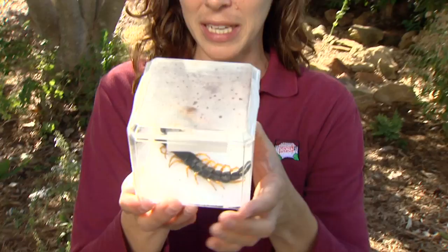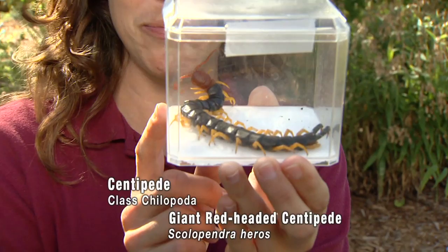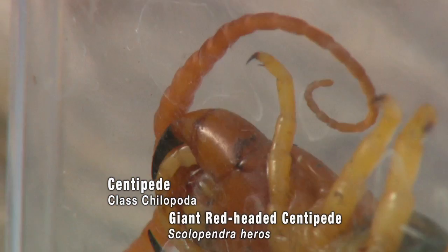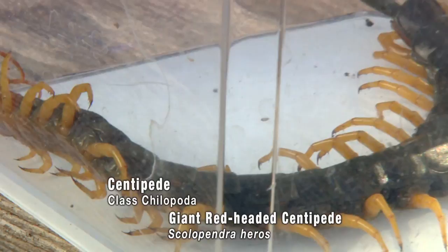One last predator we have here is the centipede, and this is a really large specimen collected in Payne County. Typically we see a little bit smaller relatives, but they are all very good predators. Now they can bite or sting — it feels a little like a wasp sting — but if we leave them alone they won't really bother us. They tend to hang out on the ground underneath rocks and similar places.